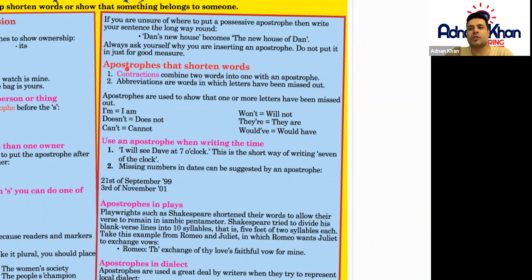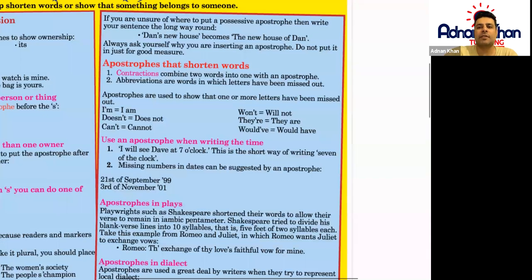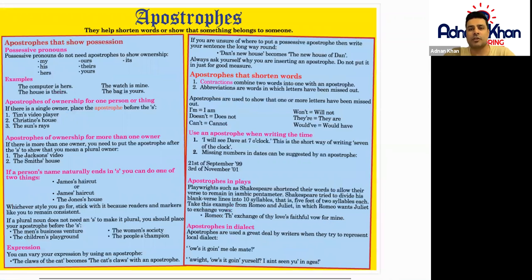Now let's look at apostrophes that shorten words — these are called contractions. Contractions combine two words into one with an apostrophe. For example: I am becomes I'm, with the apostrophe between I and M. Does not becomes doesn't, with the apostrophe between N and T. Cannot becomes can't, with the apostrophe between N and T. There are various examples of contractions across different situations — you just need to remember where the apostrophe goes in each case.